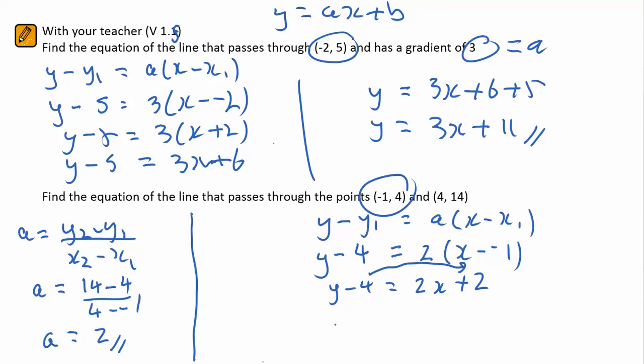Transposing the negative 4 becoming a plus 4, y equals 2x plus 6 is the equation of the line.